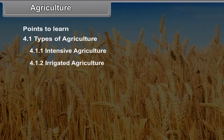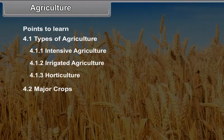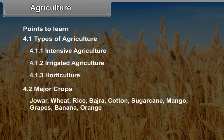Number 2, Irrigated agriculture. Number 3, Horticulture. Major crops: Jowar, Wheat, Rice, Bajra, Cotton, Sugarcane, Mango, Grapes, Banana, Orange.